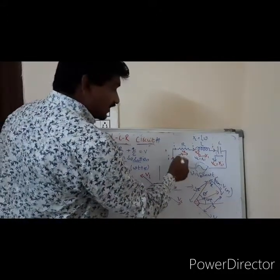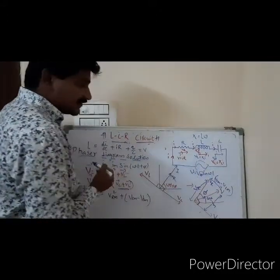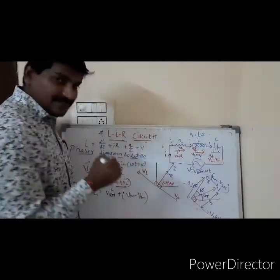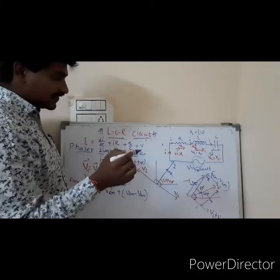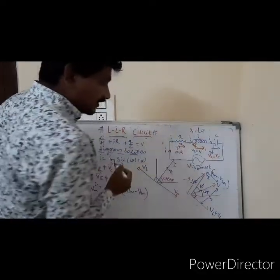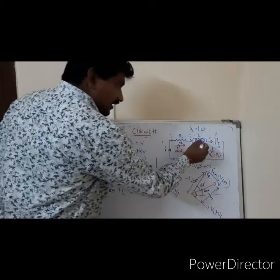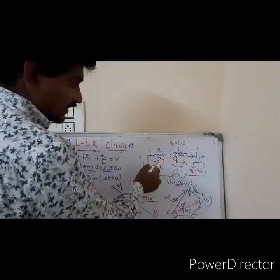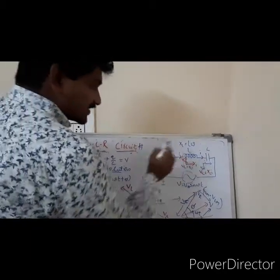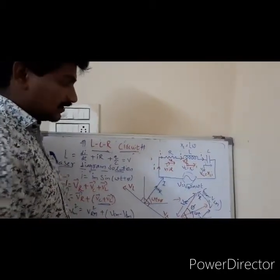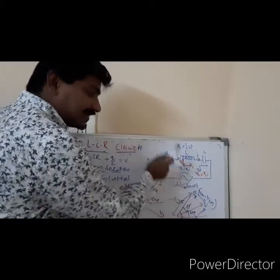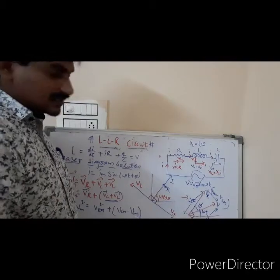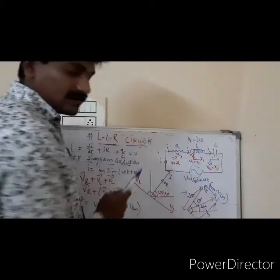The varying voltage — through the resistance, if you are seeing, V equal to IR, means in the direction of current only we can obtain the voltage. But coming to the case of resistance, the current is in the direction of voltage. Whereas coming to the case of inductor, the current is lagging behind the source voltage. And in a capacitor, current is leading the source voltage.